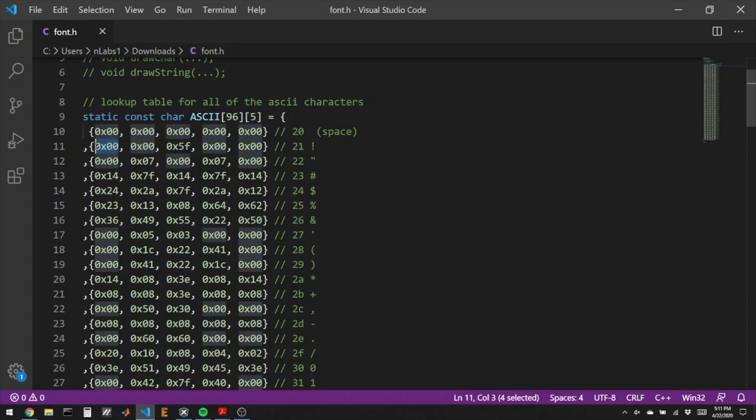So this number is the first column in a five bit wide and eight bit deep image that'll display the exclamation point.